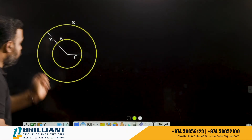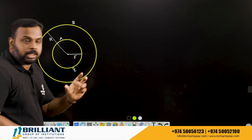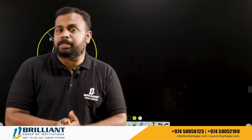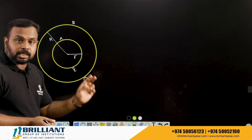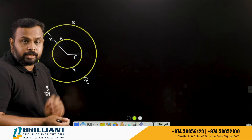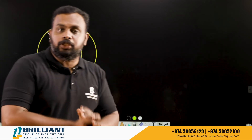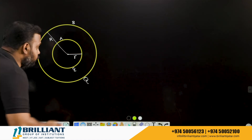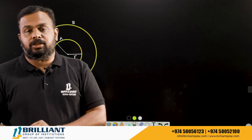Now I am going to give charge to them. The charge on the inner sphere is small q and the charge on the outer sphere is capital Q. We consider both as positive charges. Now let us assume capital Q is greater than small q, meaning the charge on the outer sphere is greater than the charge on the inner sphere. If you join these two by a wire, what will be the direction of flow of charge — from inner to outer sphere, or outer to inner?